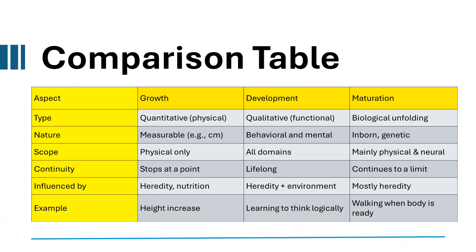Comparison table — Aspect: Growth, Development, Maturation. Type: quantitative/physical vs. qualitative/functional vs. biological unfolding. Nature: measurable (cm/kg) vs. behavioral and mental vs. genetic. Scope: physical only vs. all domains vs. mainly physical and neural. Continuity: stops at a point vs. lifelong vs. continues to a limit. Influenced by: heredity and nutrition vs. heredity plus environment vs. mostly heredity. Examples: height increase vs. learning to think logically vs. walking when body is ready.